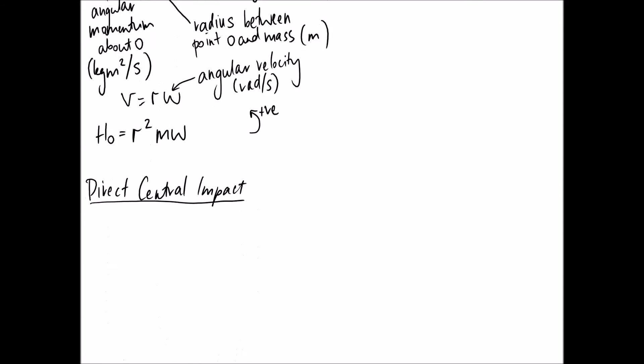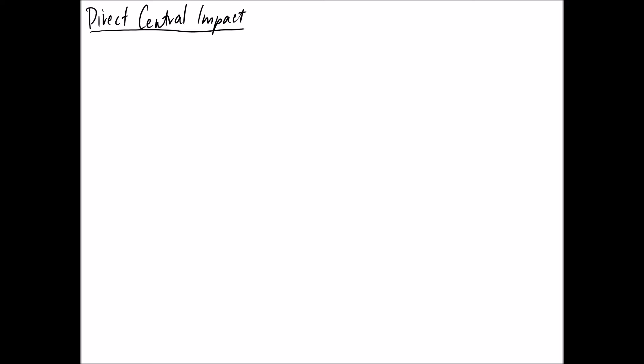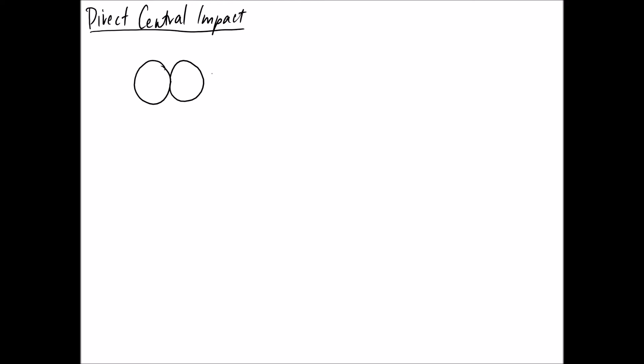Moving on to impacts. There are two different types of impacts to consider. The first and easier case is direct central impact. This is when two balls are approaching each other and their velocities V1 and V2 are directly in line with each other.